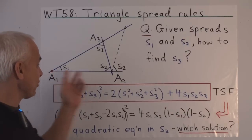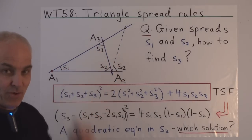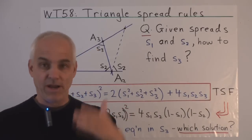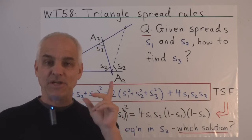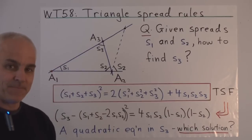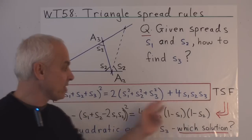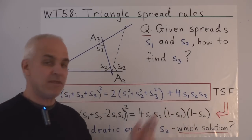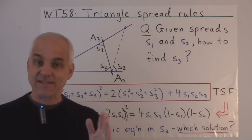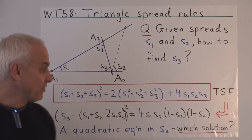The situation is: we have a triangle with its three spreads S1, S2, and S3. Suppose that we know two of those spreads, say S1 and S2, and we want to determine the third spread S3. The answer is contained in the triple spread formula — the relation between the three spreads of a triangle that replaces the sum of angles being pi in a classical trigonometric situation.